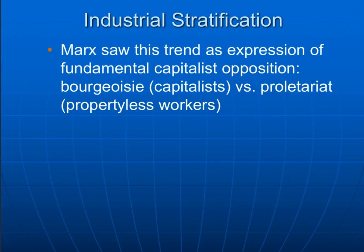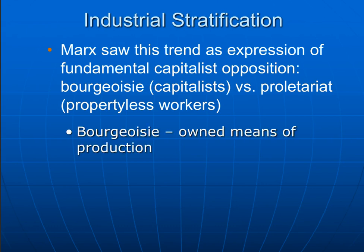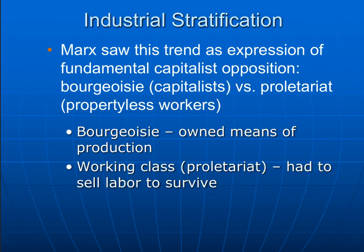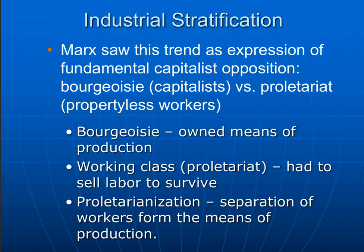Marx saw this as an expression of a fundamental capitalist opposition between the bourgeoisie — the capitalists, the owners — and the proletariat, the propertyless workers who sold their labor to the capitalists for wages. The bourgeoisie owned the means of production, and the working class or proletariat had to sell their labor to survive. We can refer to the process of proletarianization as a separation of workers from the means of production.